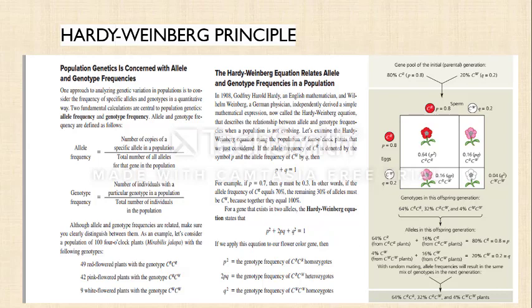We can apply the Hardy-Weinberg equation only when the following five conditions are met: number one, there is no mutation; number two, there is no random mating; number three, there is no natural selection; number four, the population size should be large; and number five, there is no gene flow in the population. The Hardy-Weinberg principle can only be applied where all five conditions meet our expectations.